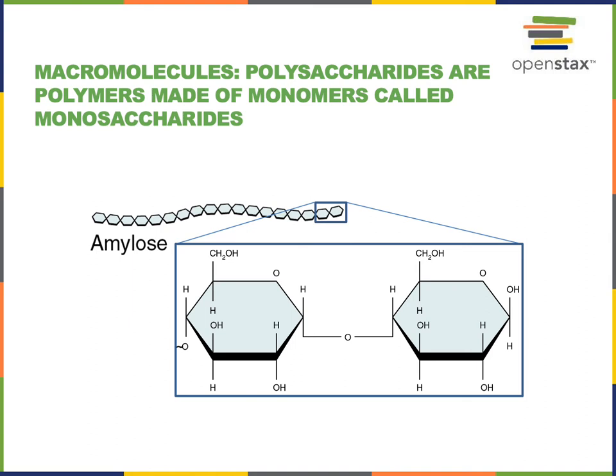In amylose, the monomers are glucose. Amylose is a form of starch — it's a polysaccharide that's produced by plant cells. So when you eat rice or wheat, when you're eating the products that are made from those grains, things like pasta or bread, one of the major nutrients found in that is the starch amylose.